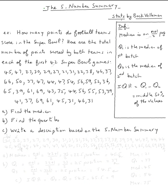The topic is the five number summary. Let's do this example: how many points do football teams score in the Super Bowl? Here are the total number of points scored by both teams in each of the first forty-two Super Bowl games.